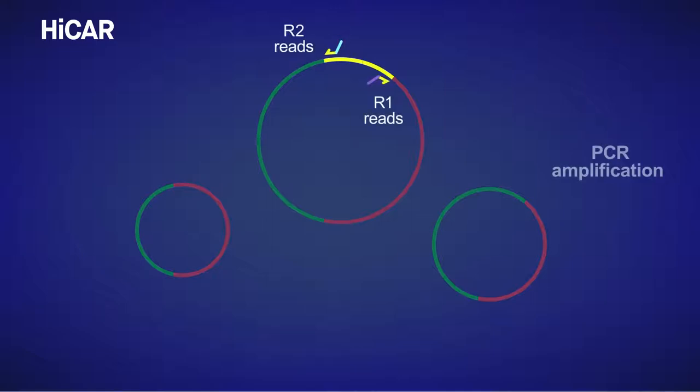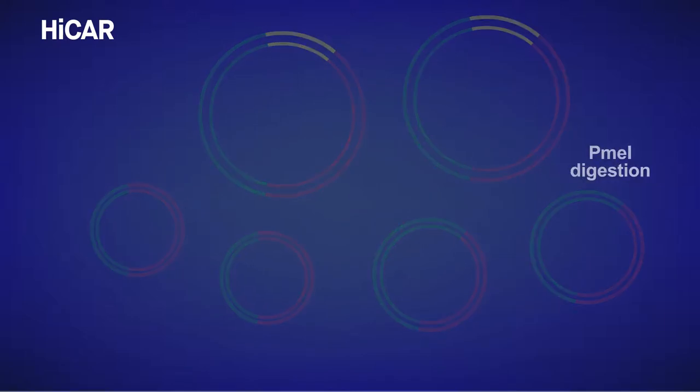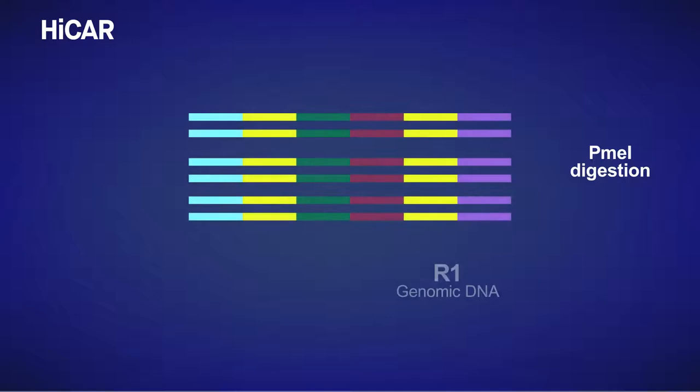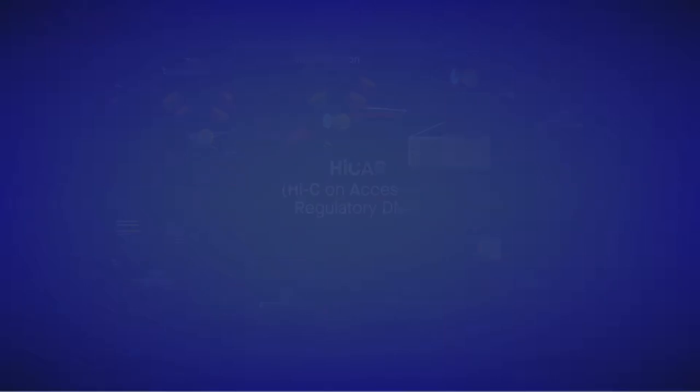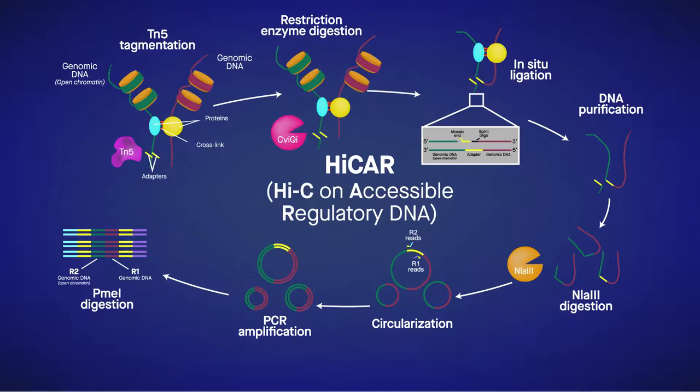PCR amplification then generates HICAR libraries for next-generation sequencing, with digested genomic DNA reads labeled R1 and open chromatin reads labeled R2. In proof-of-principle experiments, HICAR outperformed several existing methods for simultaneously capturing regulatory chromatin sequences and 3D genome structure.